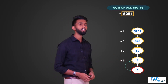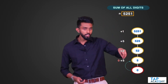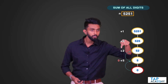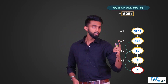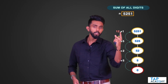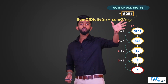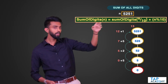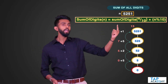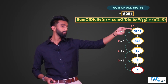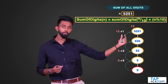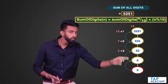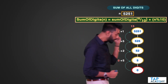The base condition returns 0, because the sum of zero digits is 0. That 0 is added to the last digit in the previous call — which is 5 — giving 5. That 5 is returned and added to 2, giving 7. Then 7 plus 5 is 12, and 12 plus 1 is 13. The recursive condition is: sumOfDigits(n) = sumOfDigits(n/10) + (n mod 10).